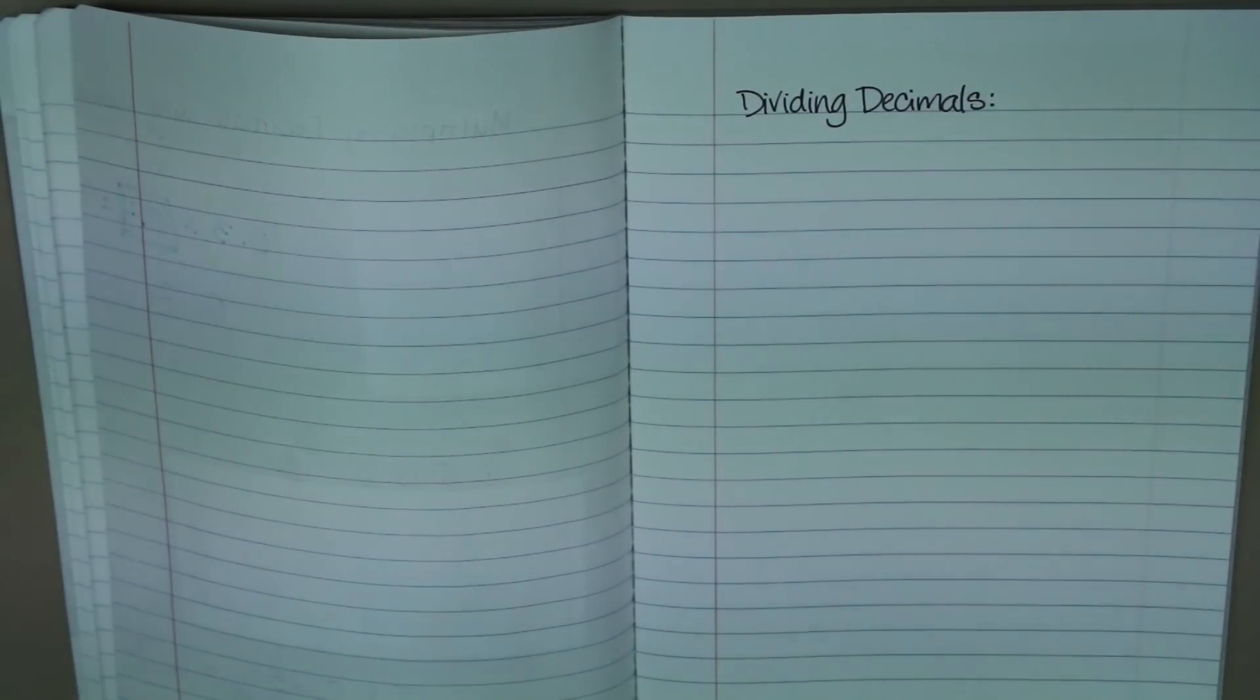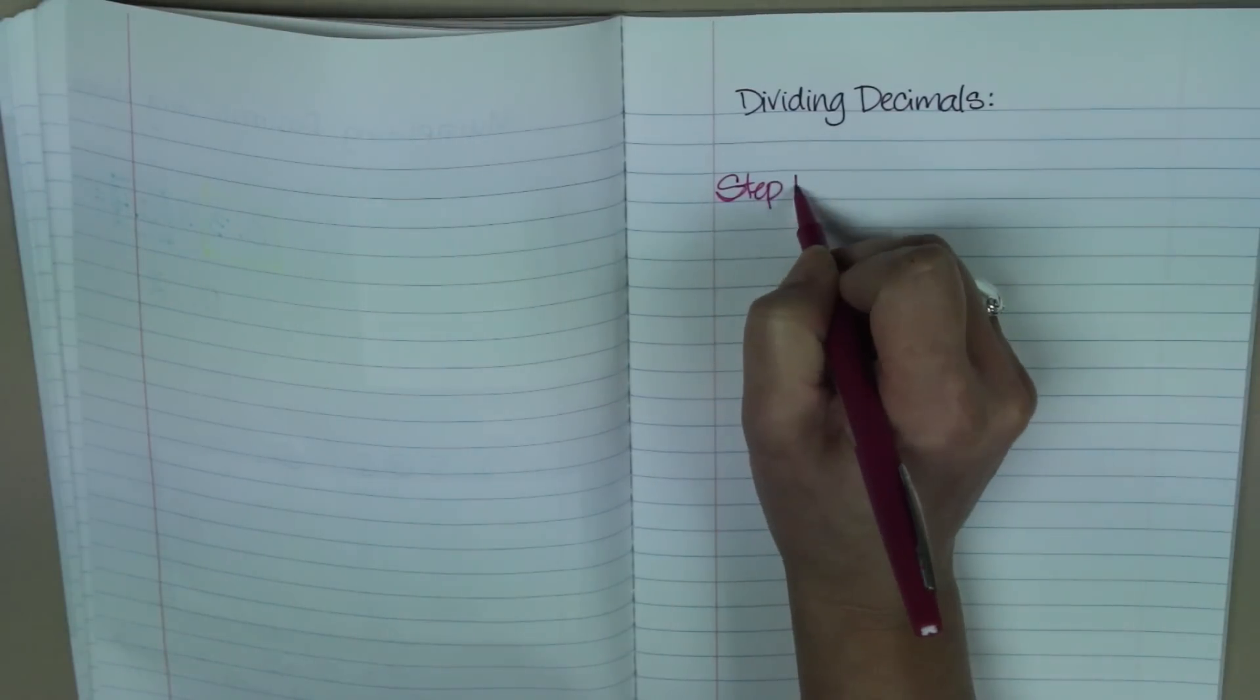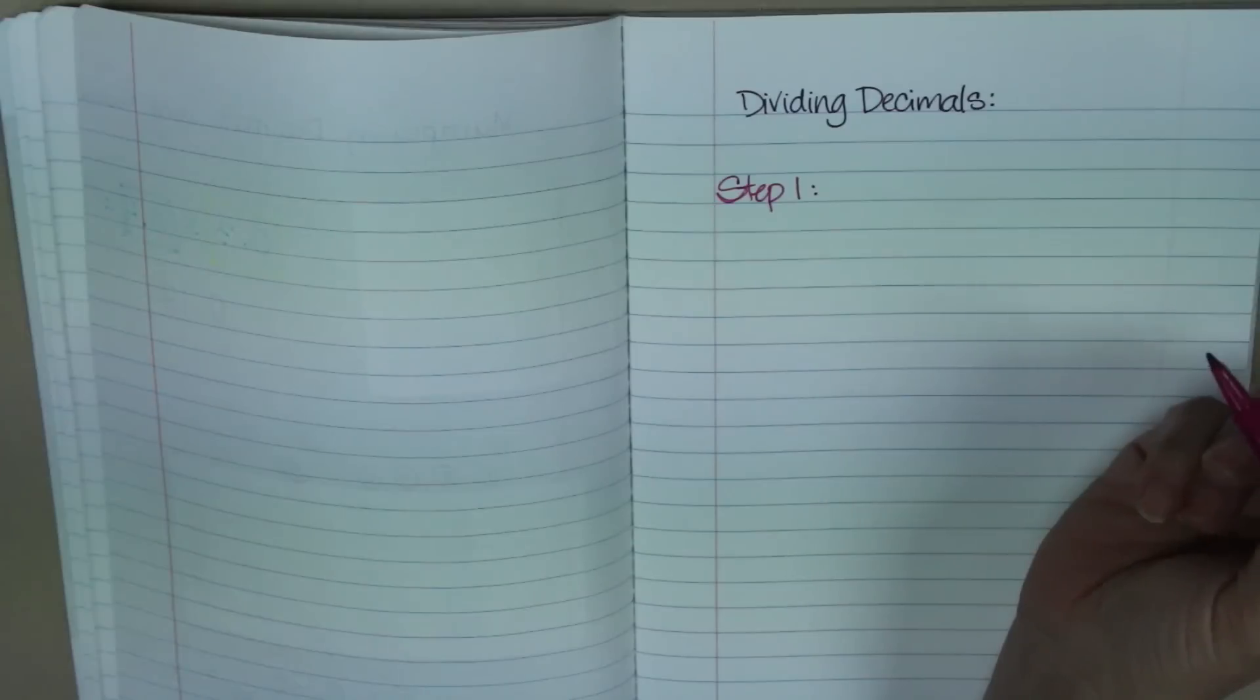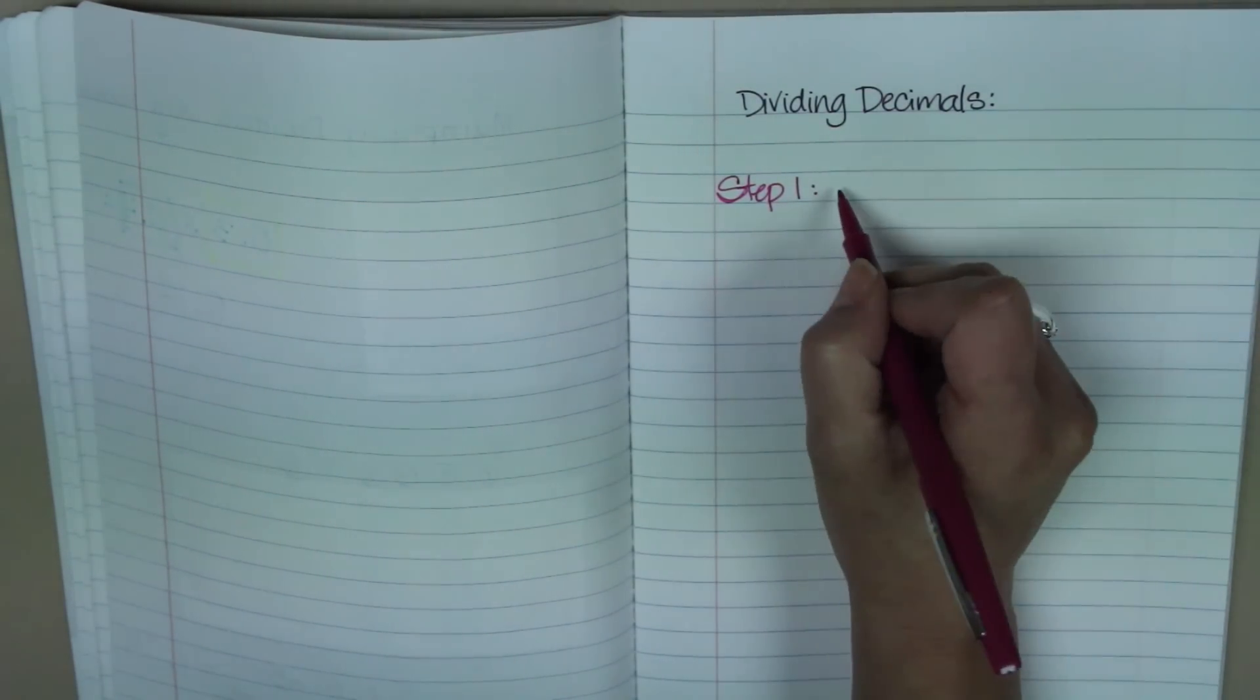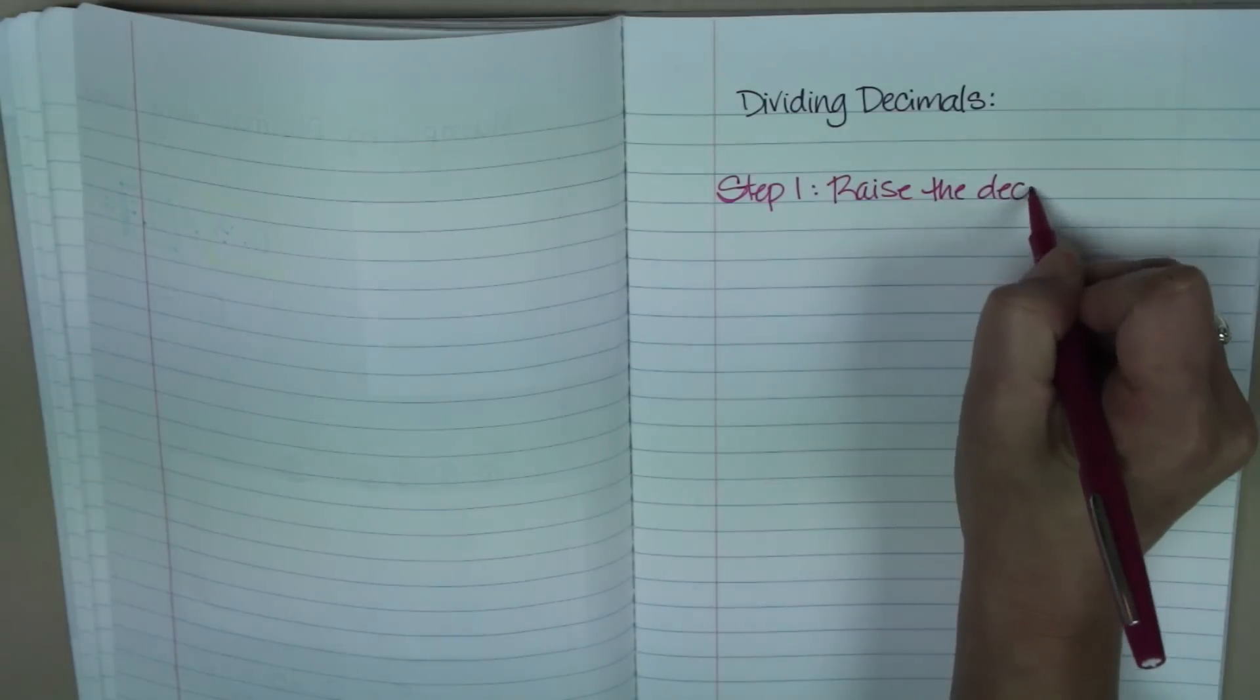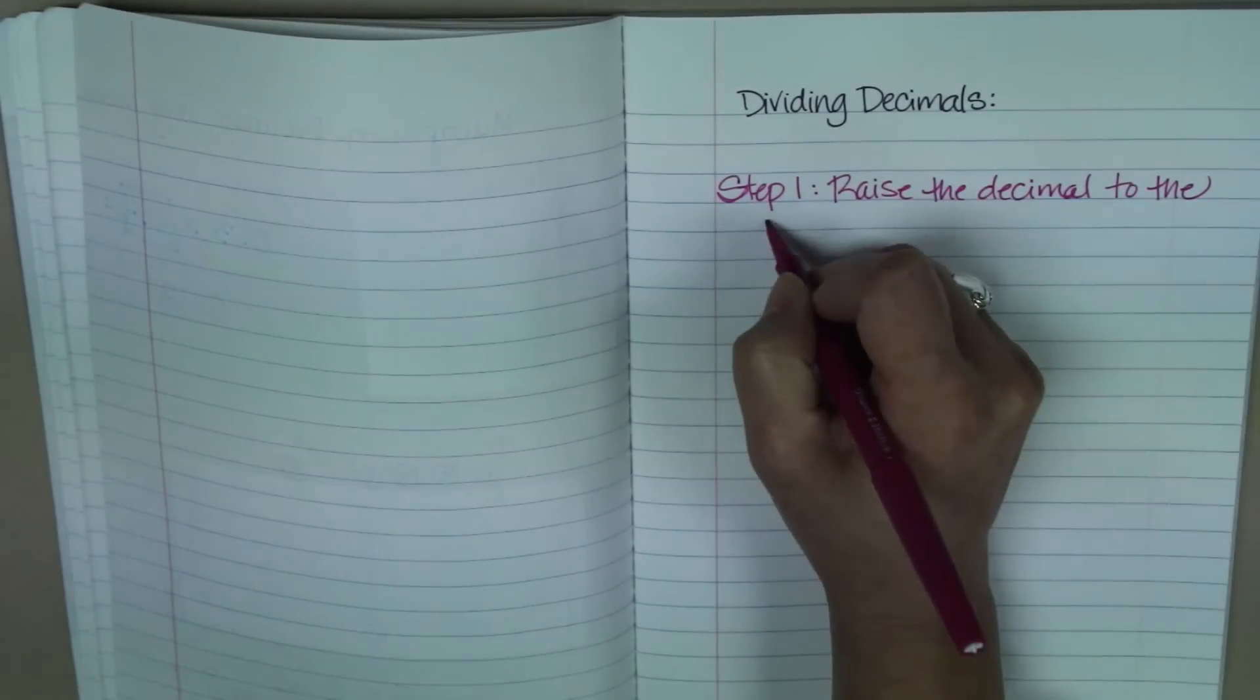Hi friends! Today we're going to be dividing decimals. It's not as hard as you think. Actually, I have a few quick pointers for you that I think will actually help you out. So the first thing, step one is going to be, and it's going to sound kind of silly, but it's going to be to raise that decimal to the roof. Meaning, raise the decimal into the quotient area.